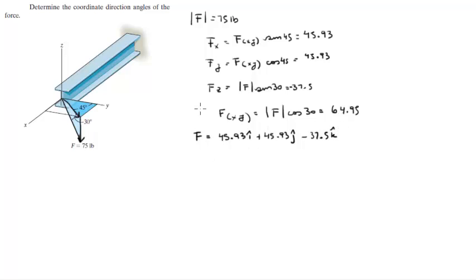Now that you have the Cartesian vector form and the magnitude, finding the angles is very easy. Three angles: this is the angle that it forms with the X, this is the angle that it forms with the Y, and this is the angle that it forms with the Z.